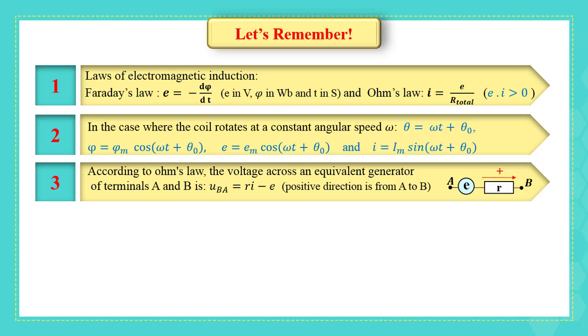Three, according to Ohm's law, the voltage across an equivalent generator of terminals A and B is UBA equals Ri minus E. Positive direction is from A to B in this example.